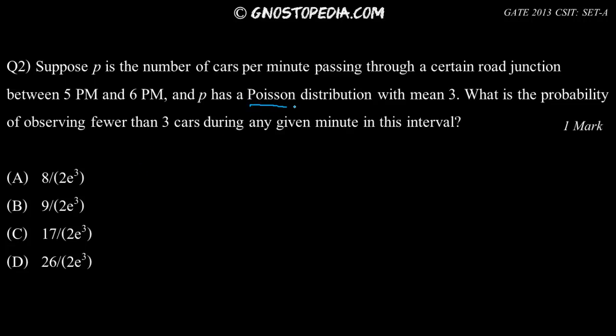Since this is a Poisson distribution sum, we need to know the formula for Poisson distribution. That is, p of x is equal to e raised to minus lambda, lambda raised to x, upon x factorial, where x is the random variable and lambda is the mean.